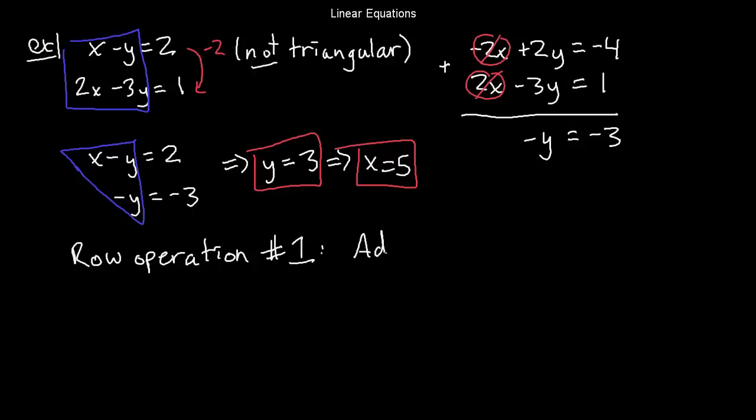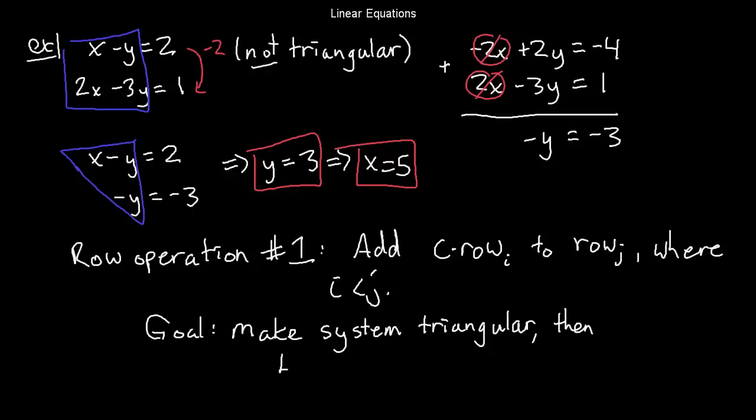So this highlights something called the first row operation. Row operation number 1: Add a multiple of some row, say c times row i, to some other row, call it row j. And here, I'm always going to insist that i be less than j, so I'm adding a multiple of one row to a lower row. The goal is to turn my system into an upper triangular one. So I'll make the system be triangular. Then I can just work my way backwards with back substitution.